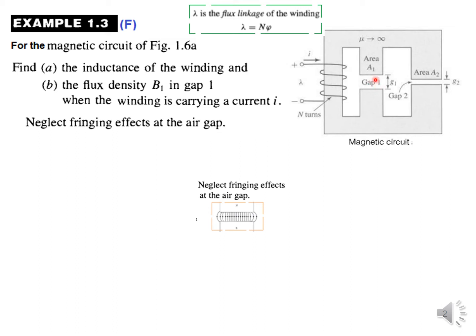But when it is saying neglect the fringing effect, that means the area of cross section of the air gap is also A1 here, and the area of cross section of this air gap is A2 here.